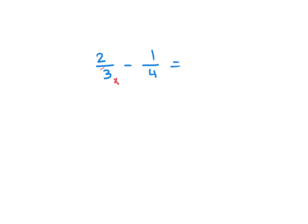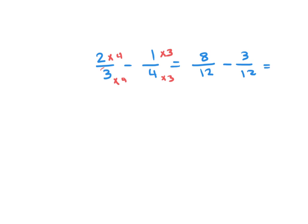Multiply 3 times 4 and 4 times 3. If you multiply the denominator by 4, you have to multiply the numerator by 4 as well, because we need an equivalent fraction to 2 over 3 with a different denominator. Then multiply the numerator of the second fraction by 3. So we get 8 over 12 minus 3 over 12.